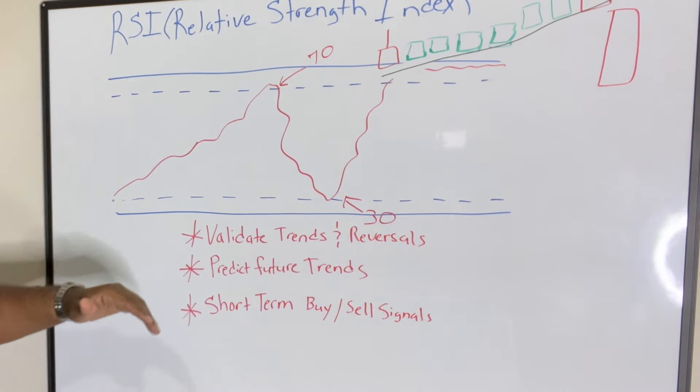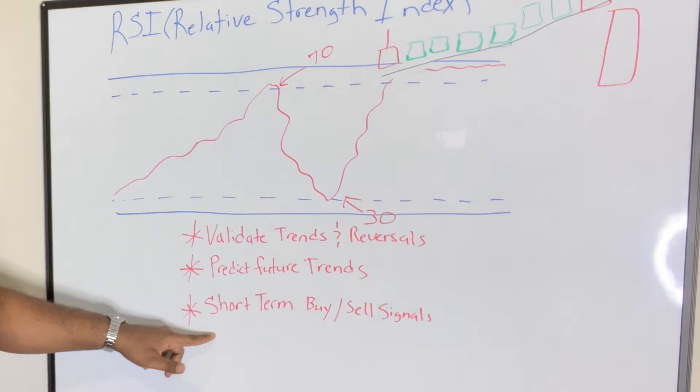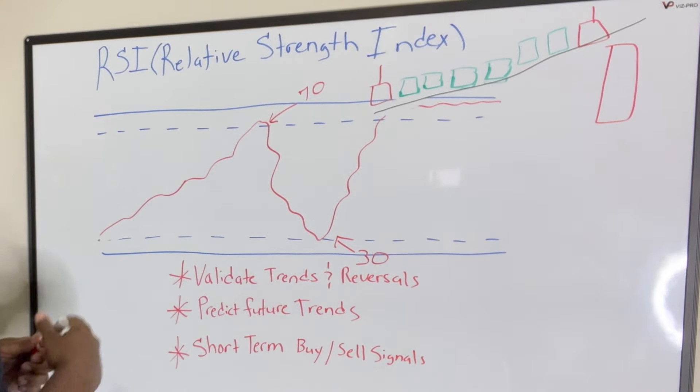Ultimately you have three points that you can use it for. There's a few more but these are the main ones: validate trends and reversals, predict future trends, and short-term buy and sell signals. Overbought is technically when you turn on your RSI indicator you're going to see overbought anytime it hits around 70.